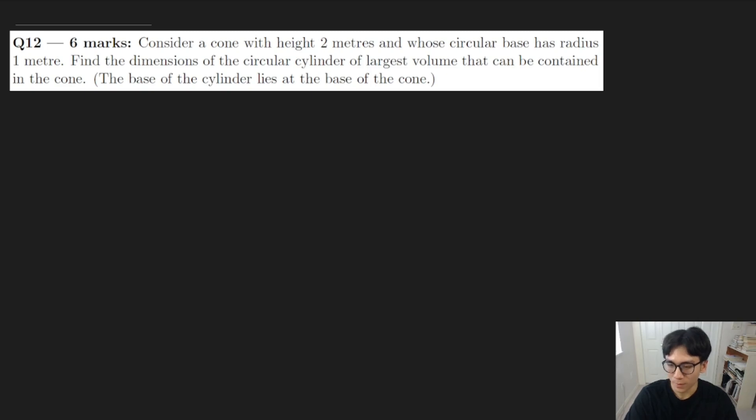Hopefully you pause the video and take a look at this question. Here we have a cone with height 2 meters and a circular base with radius 1 meter. We'll first need to draw a situation, but also notice that we want the dimensions with largest volume. This is kind of like an optimization question. We want optimized for largest volume. And so we're going to draw a situation, try to come up with some type of relationship between variables here.